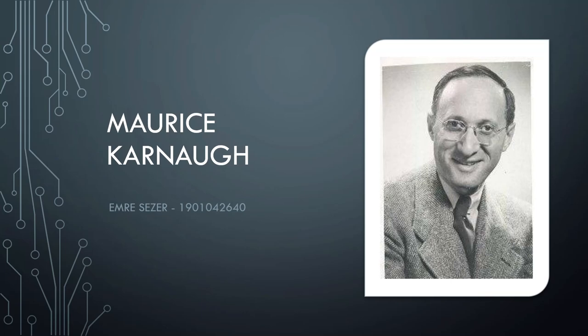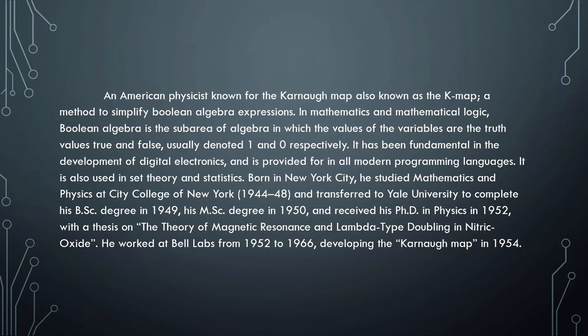Hello, today I'm going to talk about Maurice Conroe. Maurice Conroe is an American psychosis known for the Conroe map, also known as the K-map, a method to simplify boolean algebra expressions.